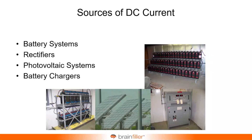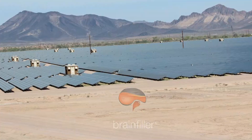I want to show you a little bit about what we have right now when it comes to DC. We have battery systems, rectifiers, photovoltaic systems, and battery chargers — which are basically like a rectifier — and DC power systems are increasing. This is a photovoltaic installation about two hours southwest of where I am in the Phoenix area, towards Yuma, Arizona. This is a 290 megawatt utility-scale photovoltaic installation.